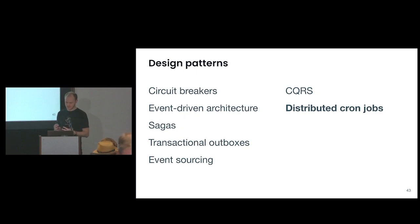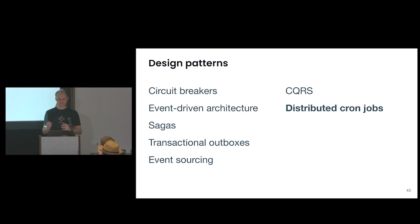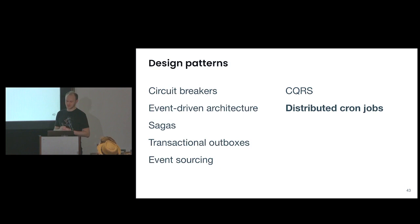Distributed cron jobs: for periodic tasks in a backend, you could put a Linux cron on a single machine, but the reliability and throughput limitations mean you often need a distributed cron system. In Temporal and other durable execution systems, it's very easy — you just sleep. You know it will wake up when the sleep period is done, and it scales well horizontally to a high total number of running functions and high throughput of functions waking up simultaneously.